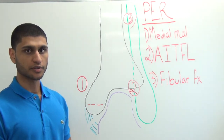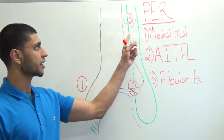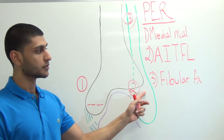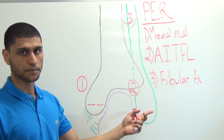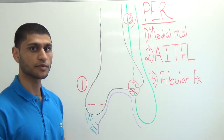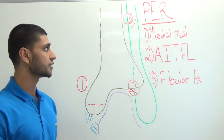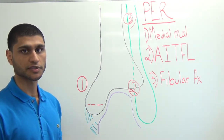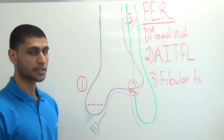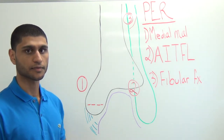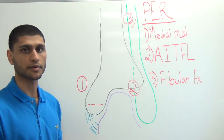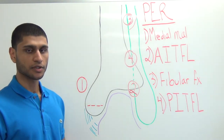In PER3, we see a spiral oblique fracture of the fibula above the level of the ankle joint, making this a Danis-Weber C. These fractures are often very proximal and can even be as high as the fibular neck — the eponym for that fracture is a Maisonneuve. For a fracture that high in the fibula, there is a possibility that the common peroneal nerve may be damaged.